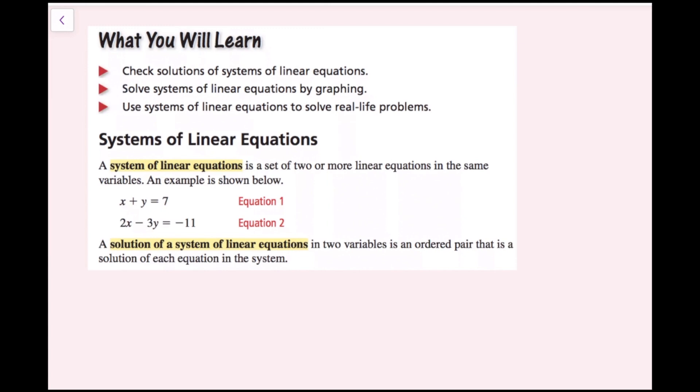A system of linear equations is a set of two or more linear equations in the same variables. An example is shown below: x plus y equals 7, and 2x minus 3y equals negative 11. A solution of a system of equations in two variables is an ordered pair that is a solution of each equation in the system.